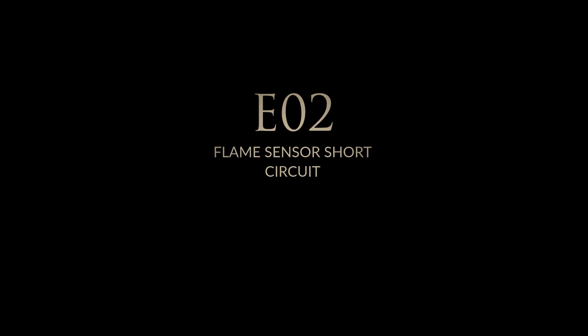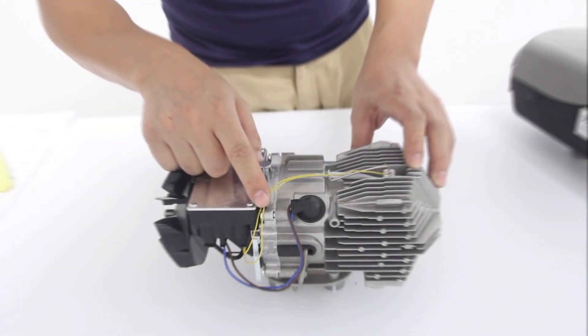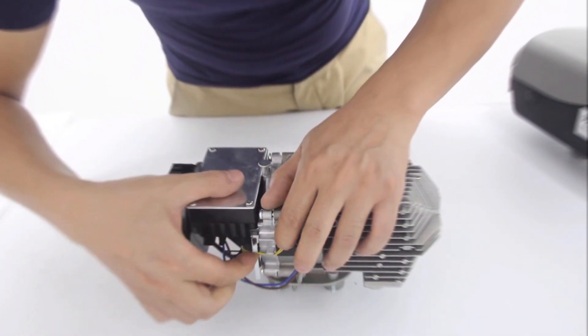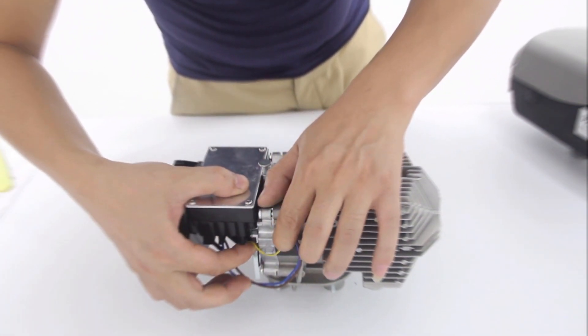Error code 2, flame sensor short circuit. To fix error 2, we need to check the temperature sensor wires. We need to make sure the wiring is routed into the right place and that all the shielding is protecting the wire.